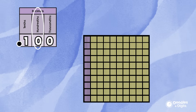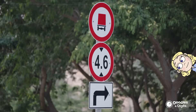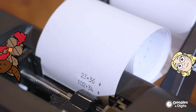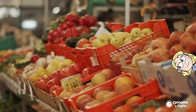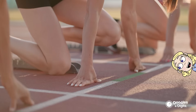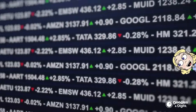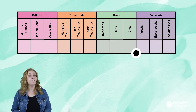Where do we see decimals in real life? Decimals are all around us in our world. Where do you see decimals in your life? For example, you might see them in money, with prices at a store. You might see them when you're tracking times of how fast you can run or swim. You might see them in stock prices, or even in measurements.